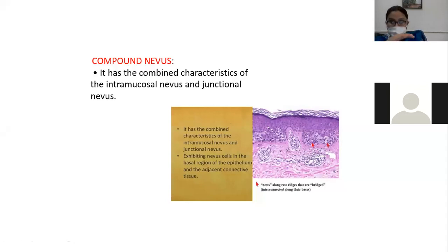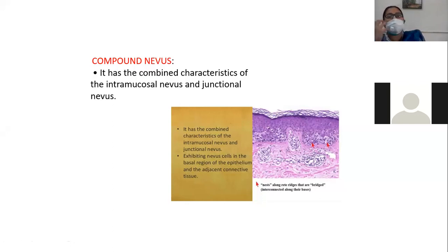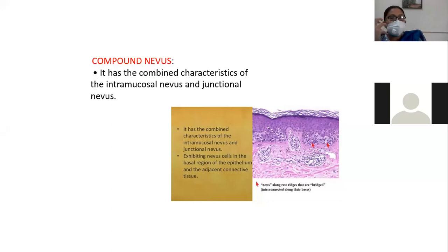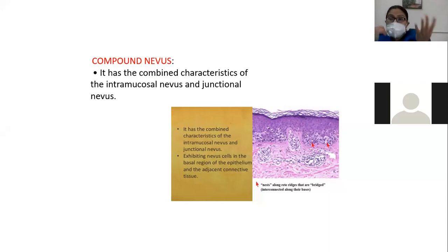Today we are discussing the skin topics: nevus, melanoma, squamous cell carcinoma, and basal cell carcinoma. Nevus is a benign tumor of melanocytes. It is classified as intradermal, junctional, or compound. When nests are present only in the dermis, we call it intradermal nevus. When clusters are at the junction, we call it junctional nevus. When there is a combination of intradermal and junctional, we call it compound nevus.